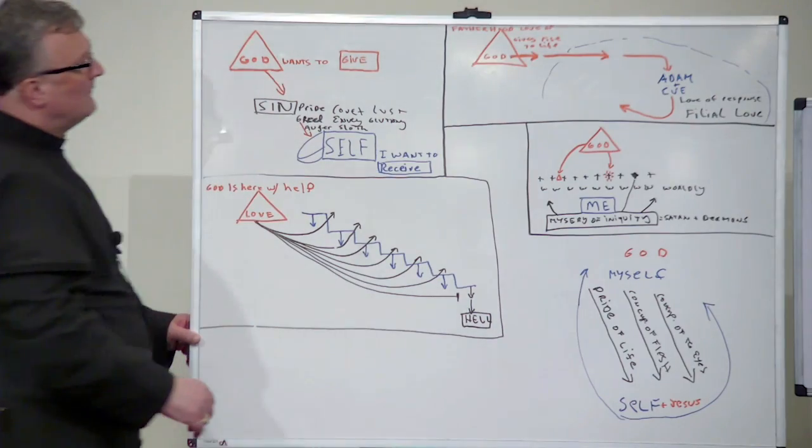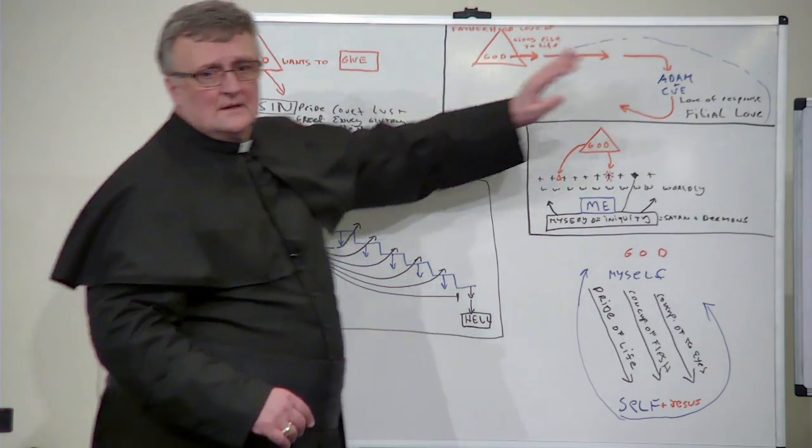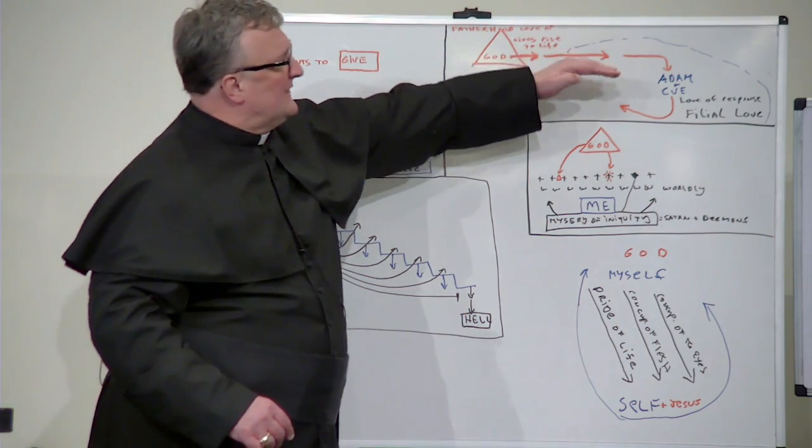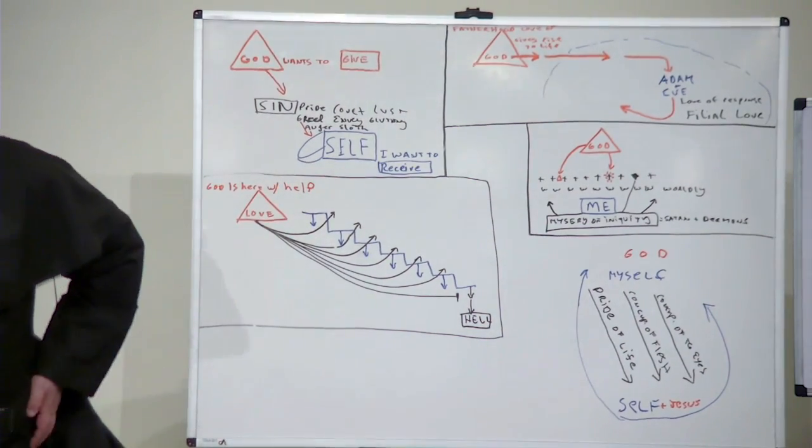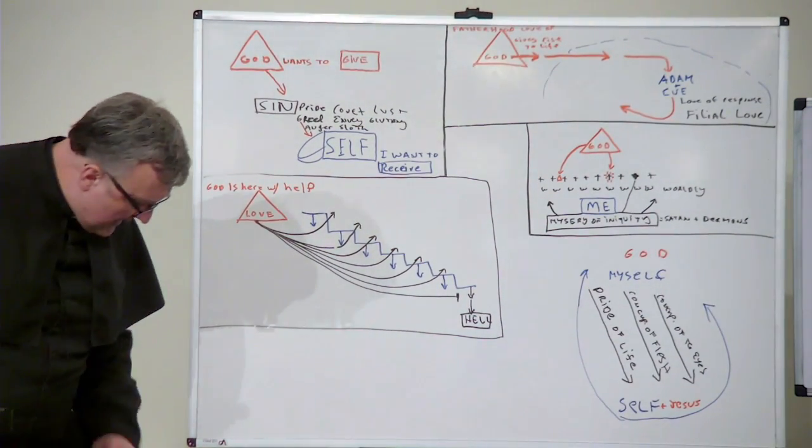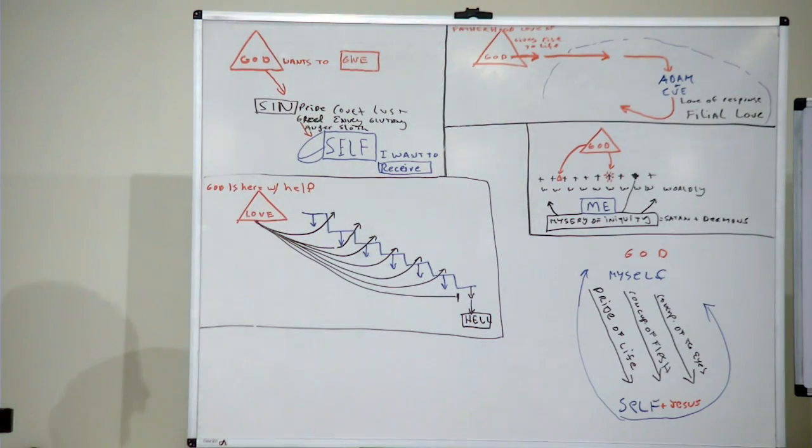In these meditations, one contemplates the sin and what it is. The tree of knowledge of good and evil is a metaphor. Now, this is the vision of St. John Paul. The fatherhood love of God gives rise to life. He brings life into the world, creates the universe, creates Adam and Eve. And Adam and Eve must return a filial love to God.